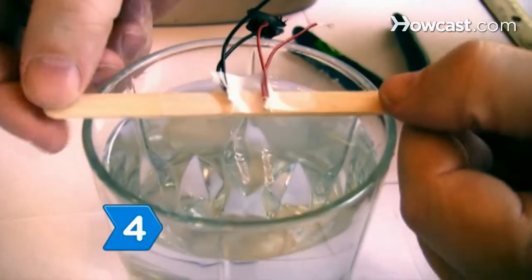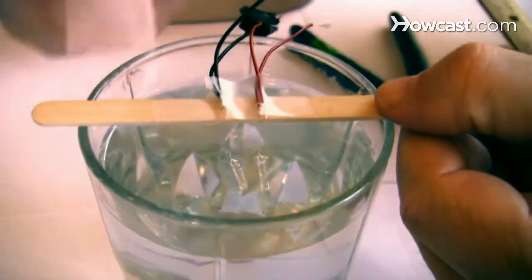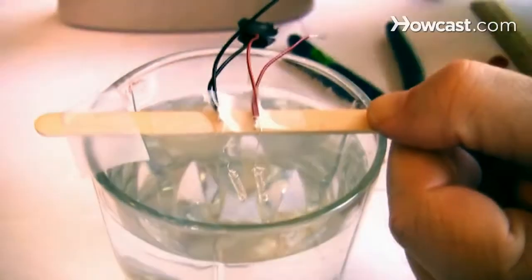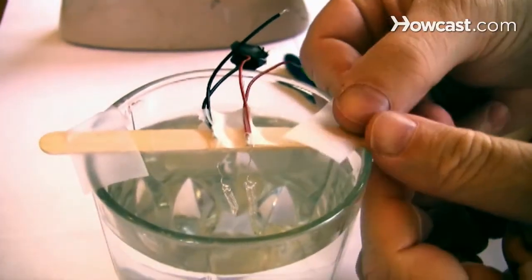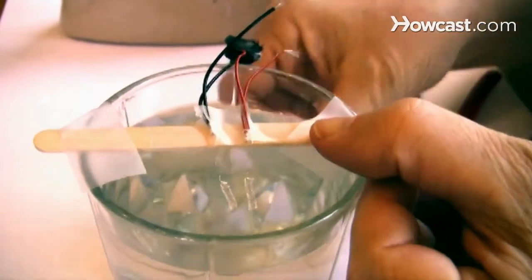Step 4. Balance the popsicle stick on the rim of the glass of water and tape the ends of the stick to the rim of the glass. Make sure only the coiled electrodes hang into the water, not the twisted leads.